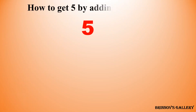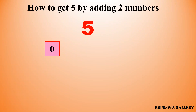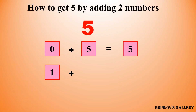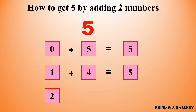How to get 5? By adding two numbers. 0 plus 5 is equal to 5. 1 plus 4 is equal to 5. 2 plus 3 is equal to 5.